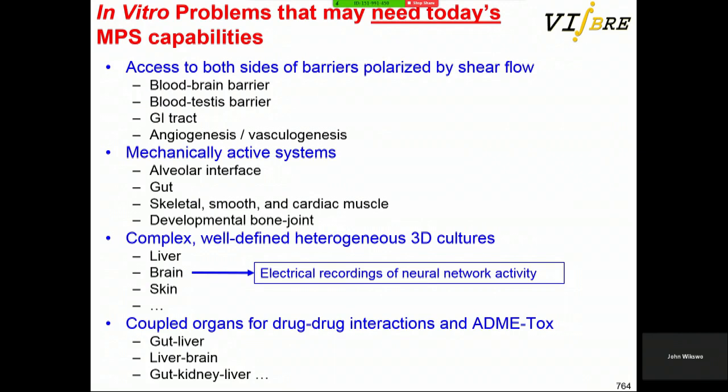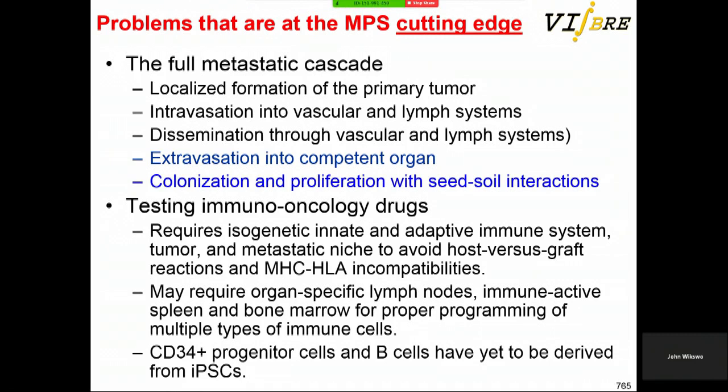There are things you can do with microphysiological systems that you can't do with other models — including getting both sides of barriers, mechanically active systems, complex heterogeneous cultures, and most importantly organ-organ interaction. At the cutting edge, it will be difficult to recreate the full metastatic cascade, though some of the latter steps are clearly accessible to MPS. In immuno-oncology, you have to worry about building an MHC-HLA compatible homunculus.